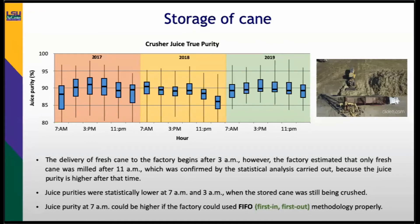Juice purity at 7 a.m. could be higher if the factory used FIFO methodology — First In, First Out. The factory stores cane during the night, placing cane from 7 p.m. in a location, but the last cane placed — around 6 a.m. — ends up being the first ground the next day. This should be the opposite: the first cane placed should be the last taken, so the freshest cane is ground first.